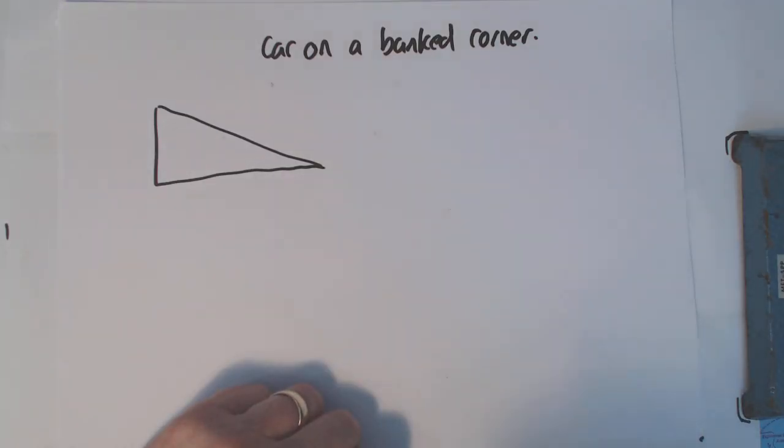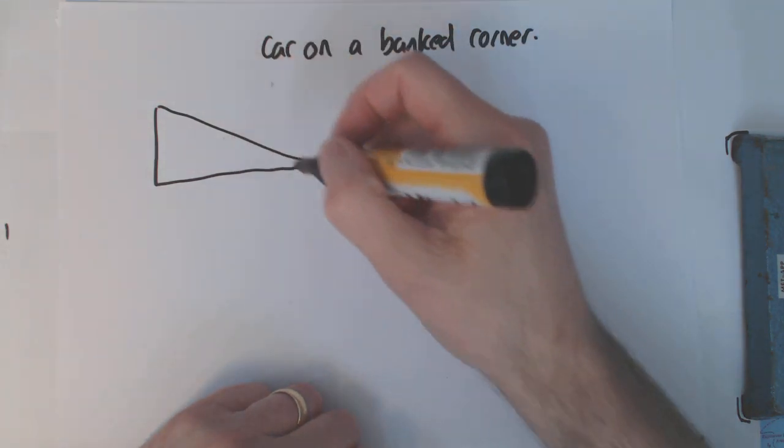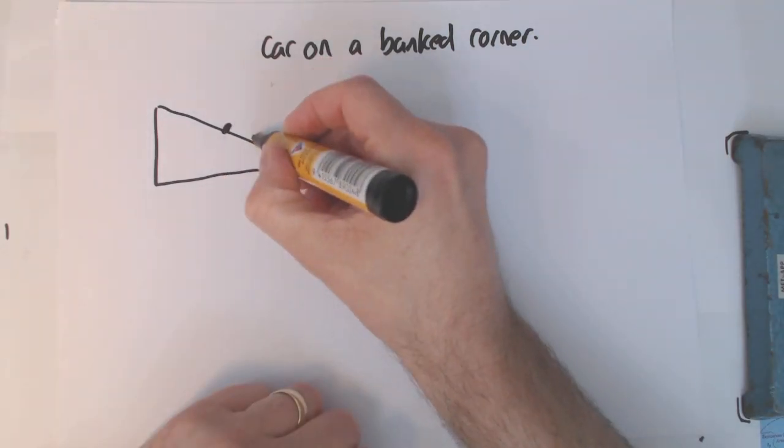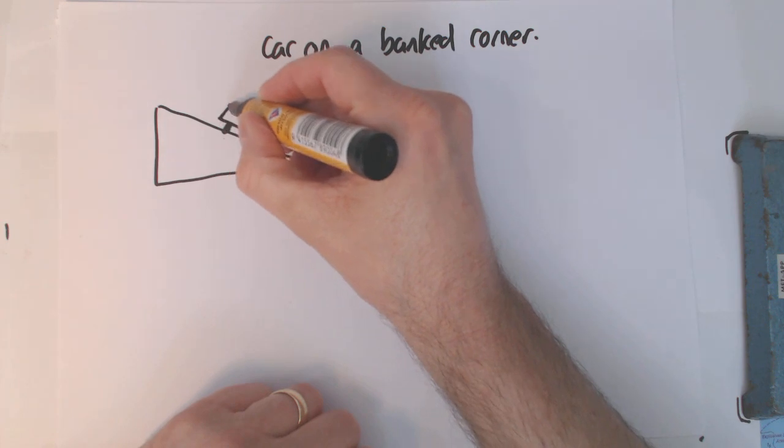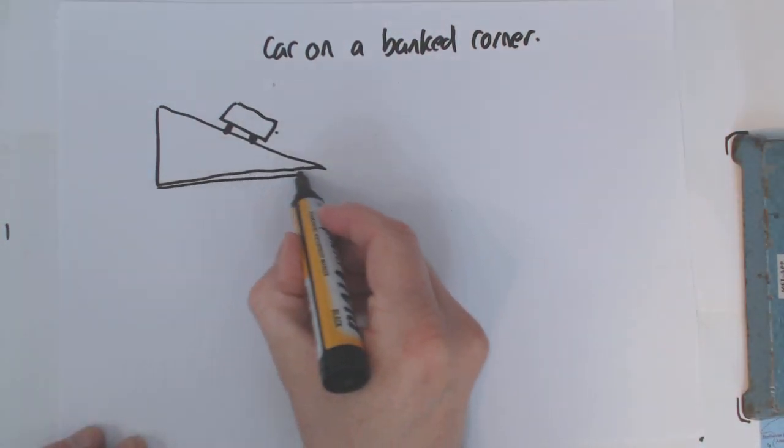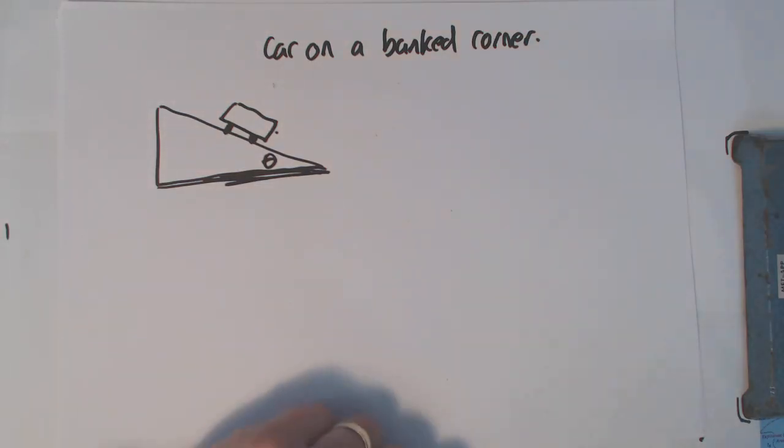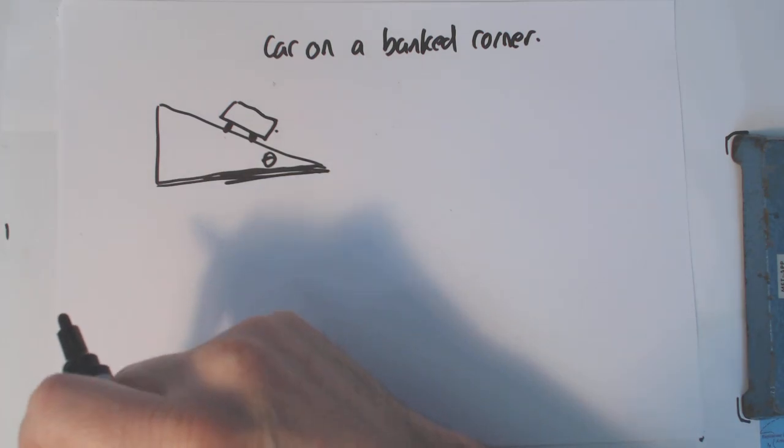If we look at the car going around a banked corner, this is quite extreme, but they do actually do this, don't they? Let's call that theta – that's the angle between the horizontal and the angle the car is on.